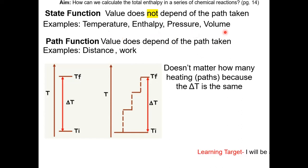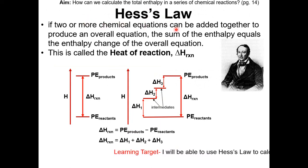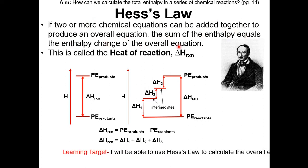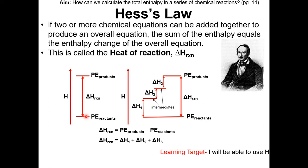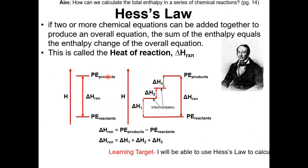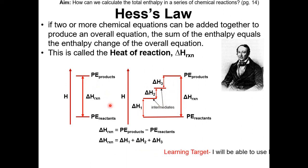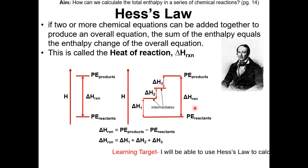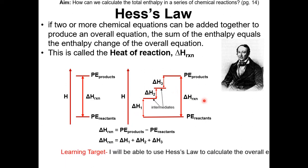For the rest of the lesson, we are going to focus on enthalpy as a state function using Hess's Law. Hess's Law states that if two or more chemical equations can be added together to produce an overall equation, the sum of the enthalpy equals the enthalpy change of the overall equation — this is called the heat of reaction, or delta H. In this diagram, we have two reactions with the same reactants and products but two different pathways. Since delta H is a state function, it is the same for both reactions, and according to Hess's Law, the sum of the individual delta Hs equals the delta H of reaction.